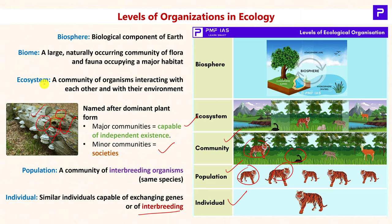Many such communities give rise to an ecosystem, and many such ecosystems together form a biome. A biome is a biogeographic region with a naturally occurring community of flora and fauna, and biomes are part of the biosphere. The biosphere is that component of the Earth which supports life — it could be the lithosphere, hydrosphere, or atmosphere.